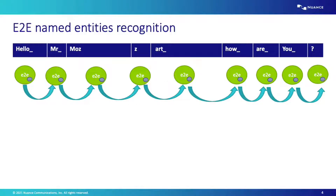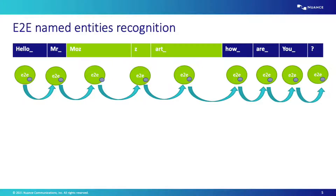Standard end-to-end systems do not differentiate between named entity tokens and standard tokens; they simply score them all using the log posterior, which has some embedded internal language model distribution. In this slide, we can see how in a hypothesis containing a named entity — Mozart — while the system provides a posterior probability to the tokens of that named entity, it is still using the internal language model distribution biased towards named entities seen in training data. That's what we want to prevent, because we might not have seen Mozart during training.